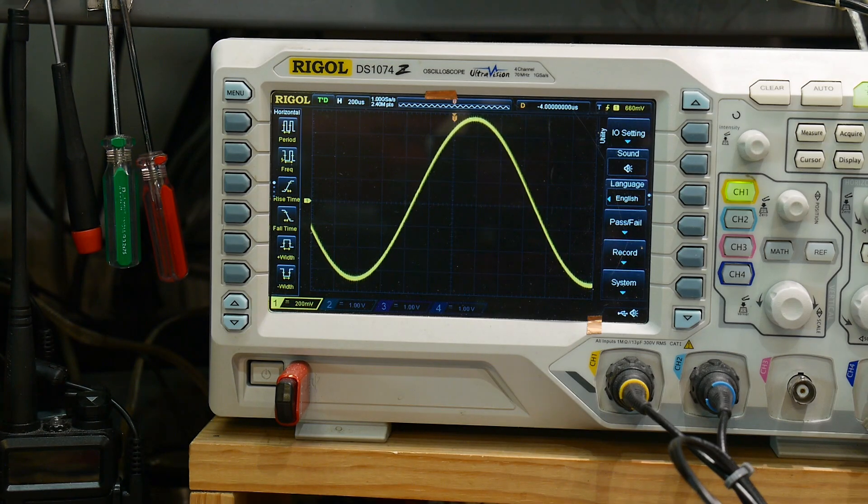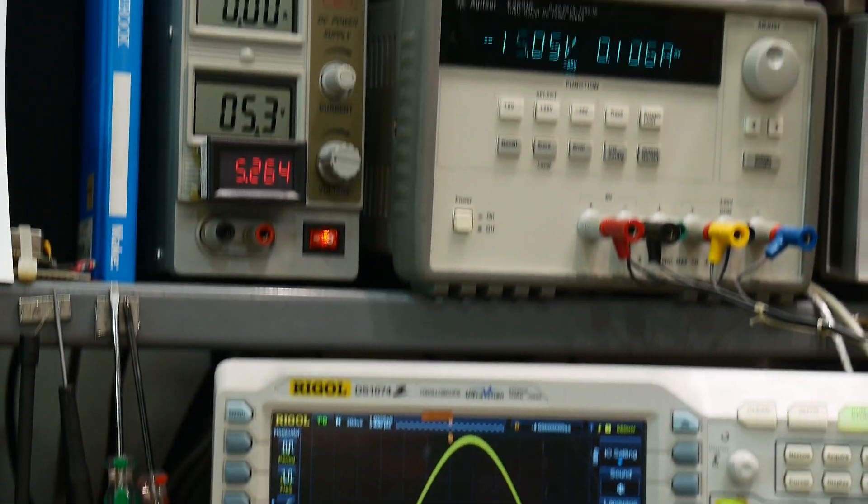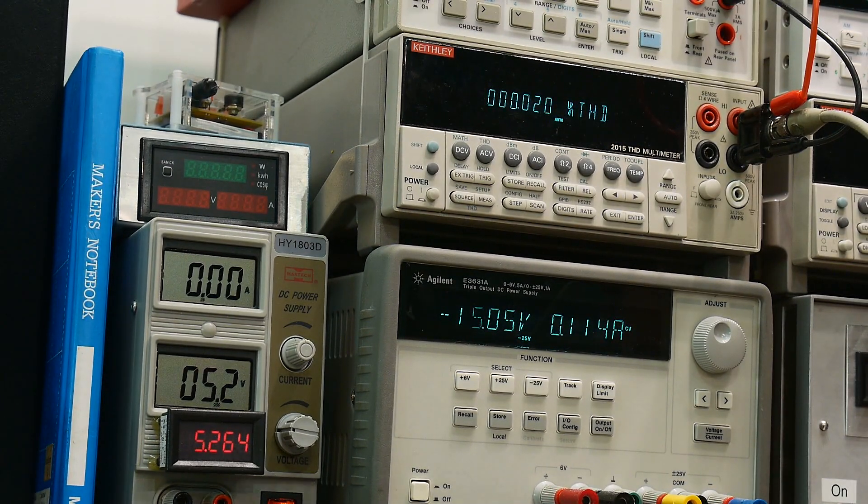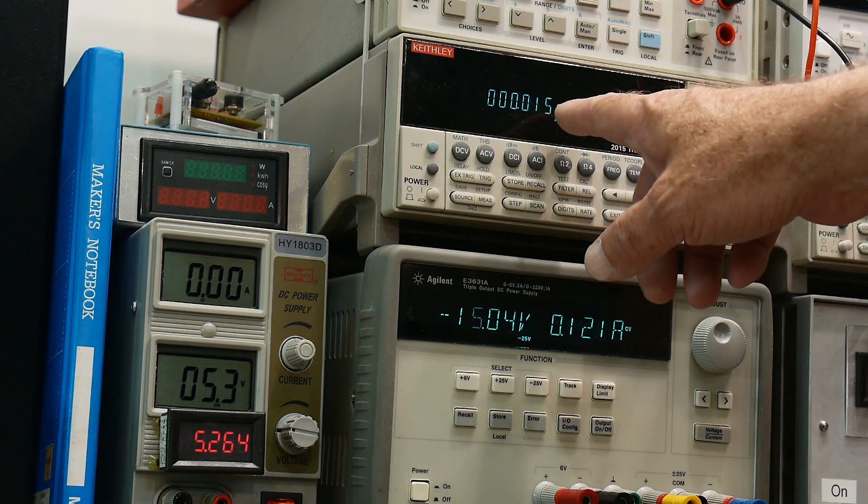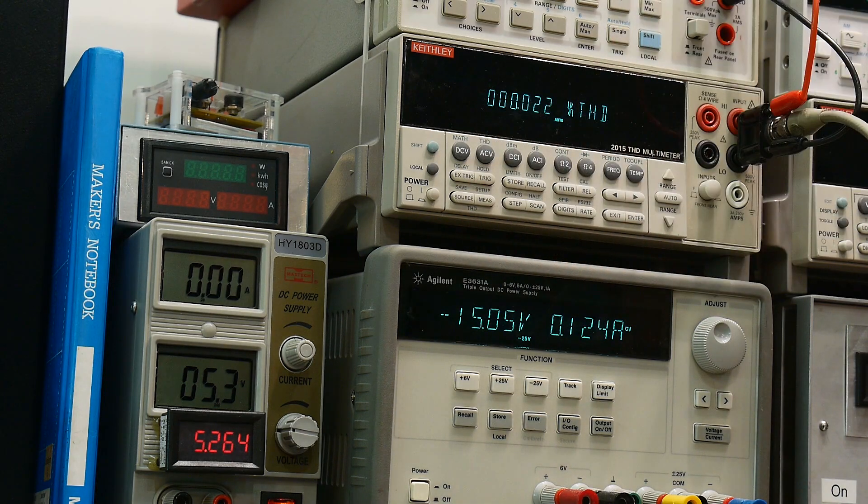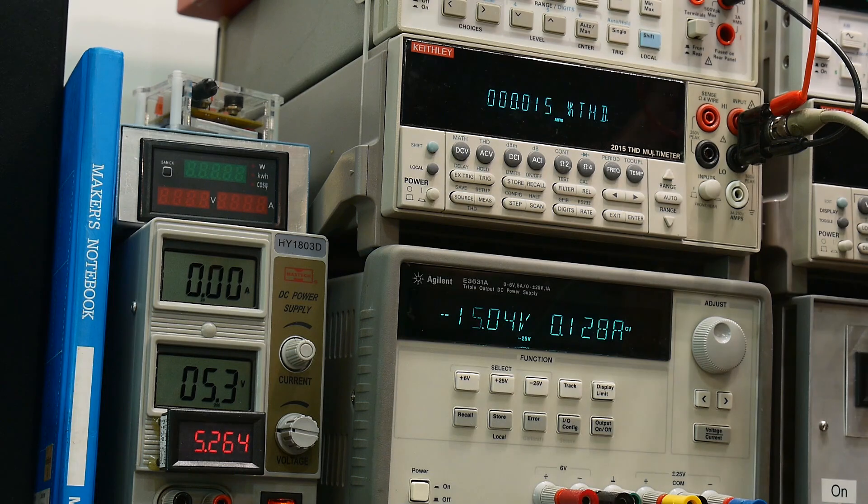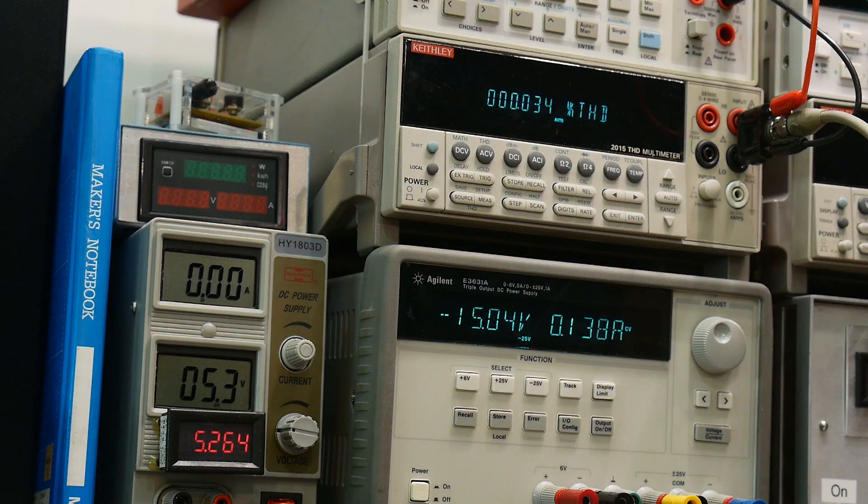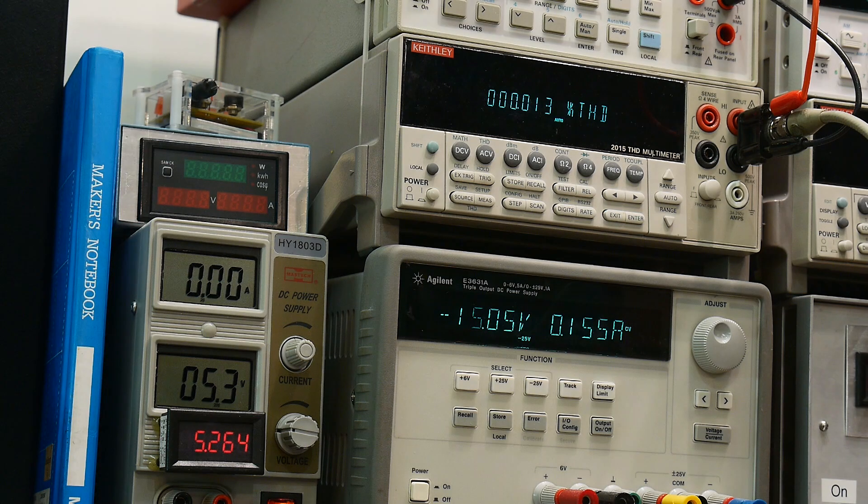And if we go up here, sorry for the angle, but we're measuring 0.015 total harmonic distortion at half a volt. Let's increase that up a bit here, a couple volts maybe.